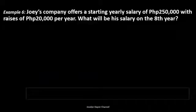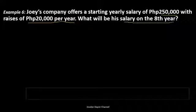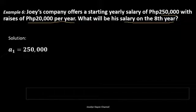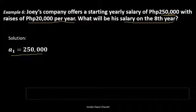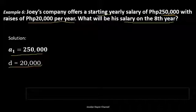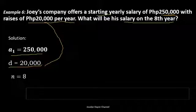Now let's have a word problem — an application of finding the nth term. Joey's company offers a starting yearly salary of 250,000 pesos with raises of 20,000 pesos per year. What will be his salary on the 8th year? We determine the first term: 250,000 pesos, the starting salary offered by the company. The common difference is 20,000 — the raise per year. And n equals 8 because we are finding the salary on the 8th year.